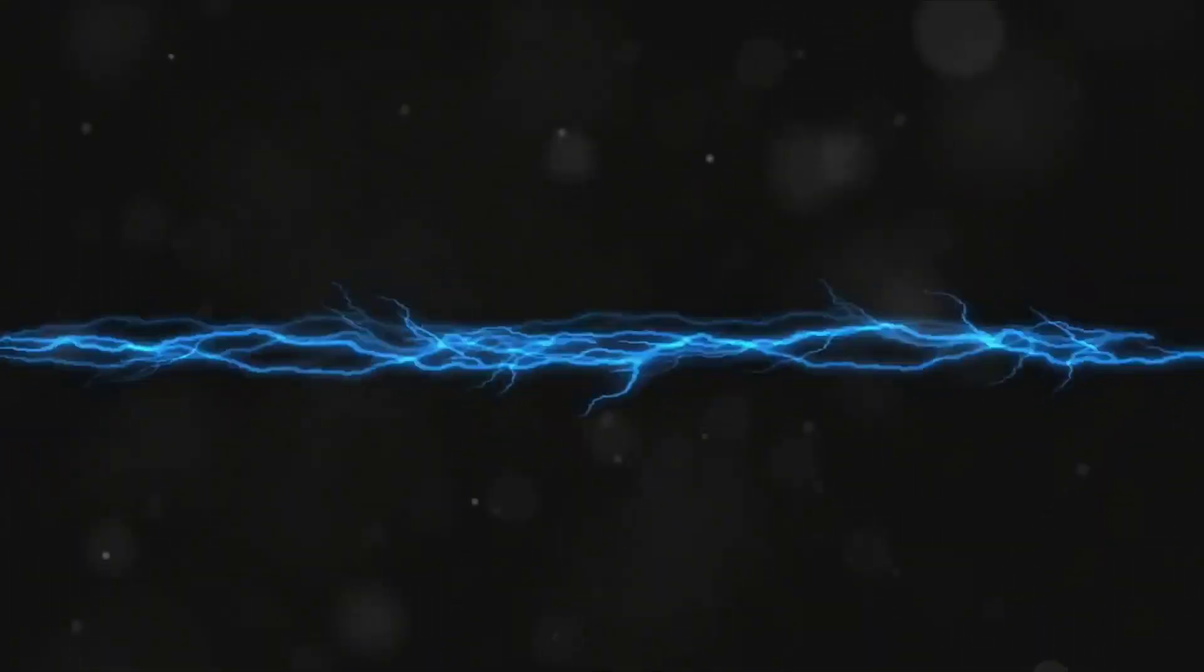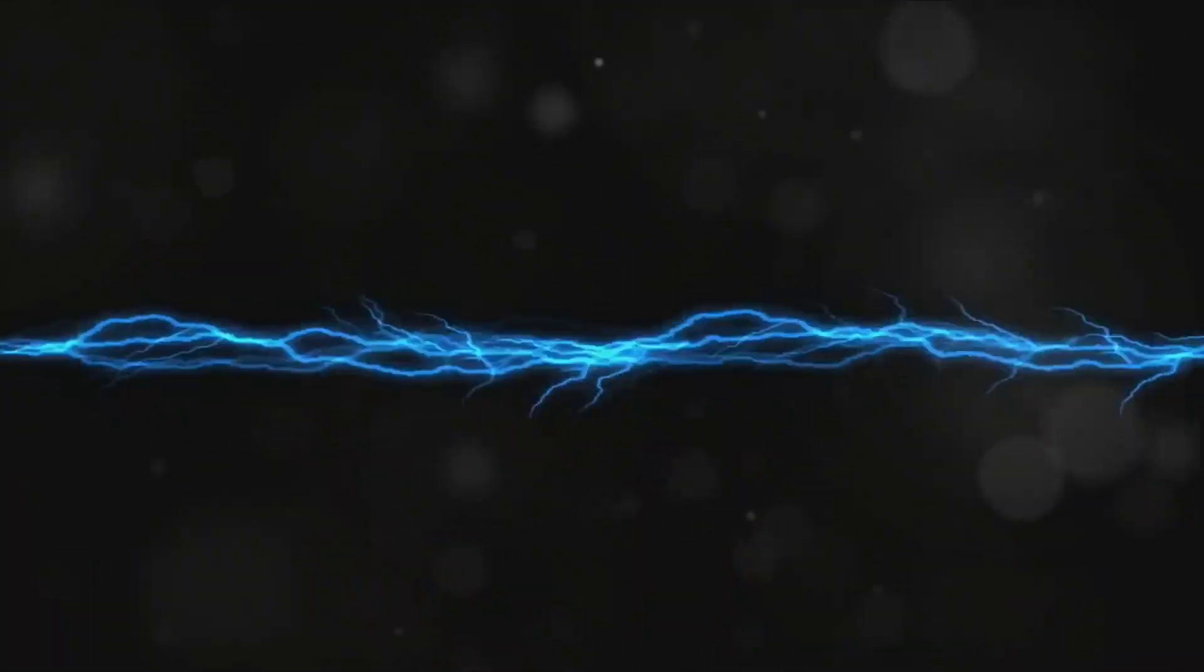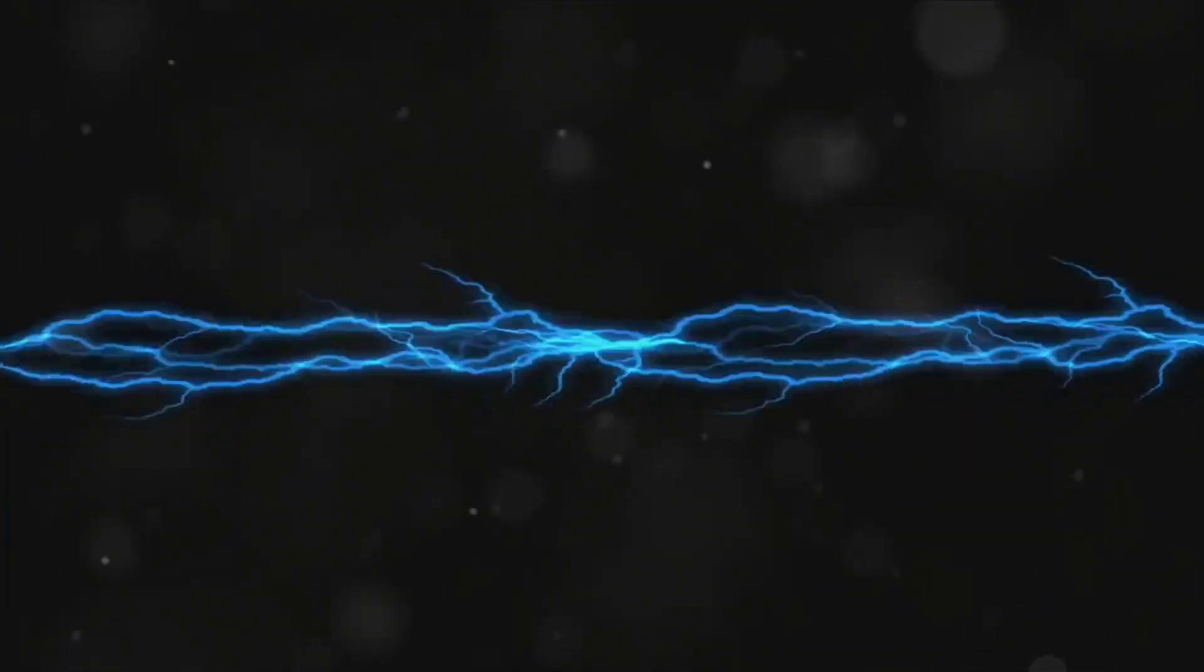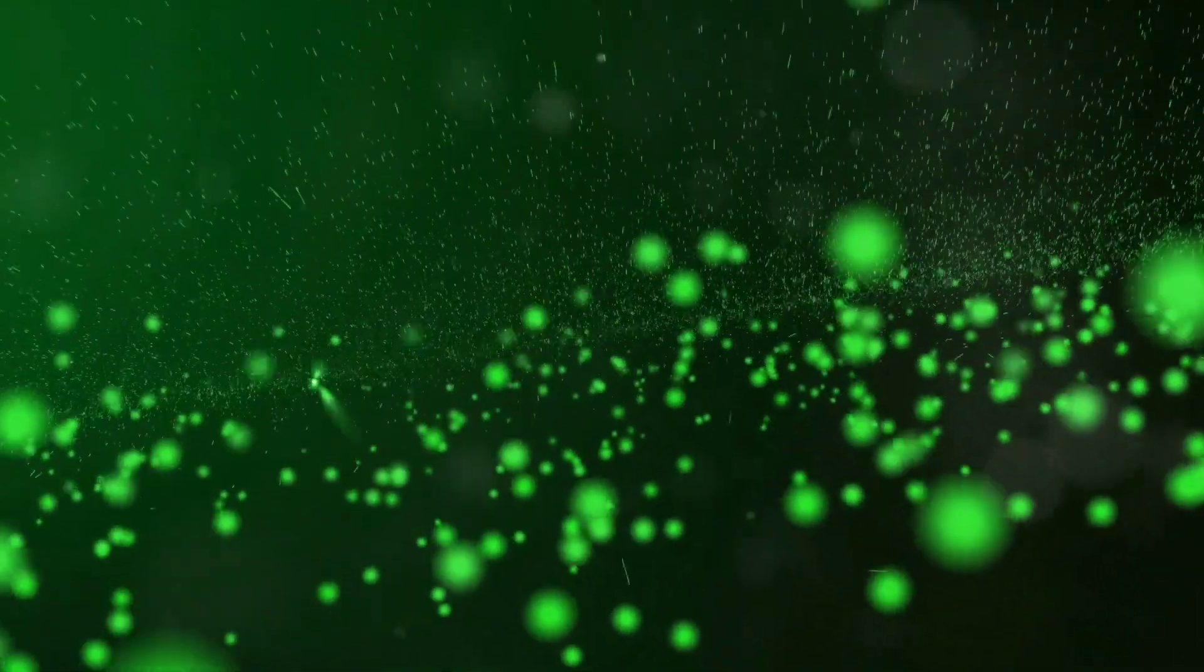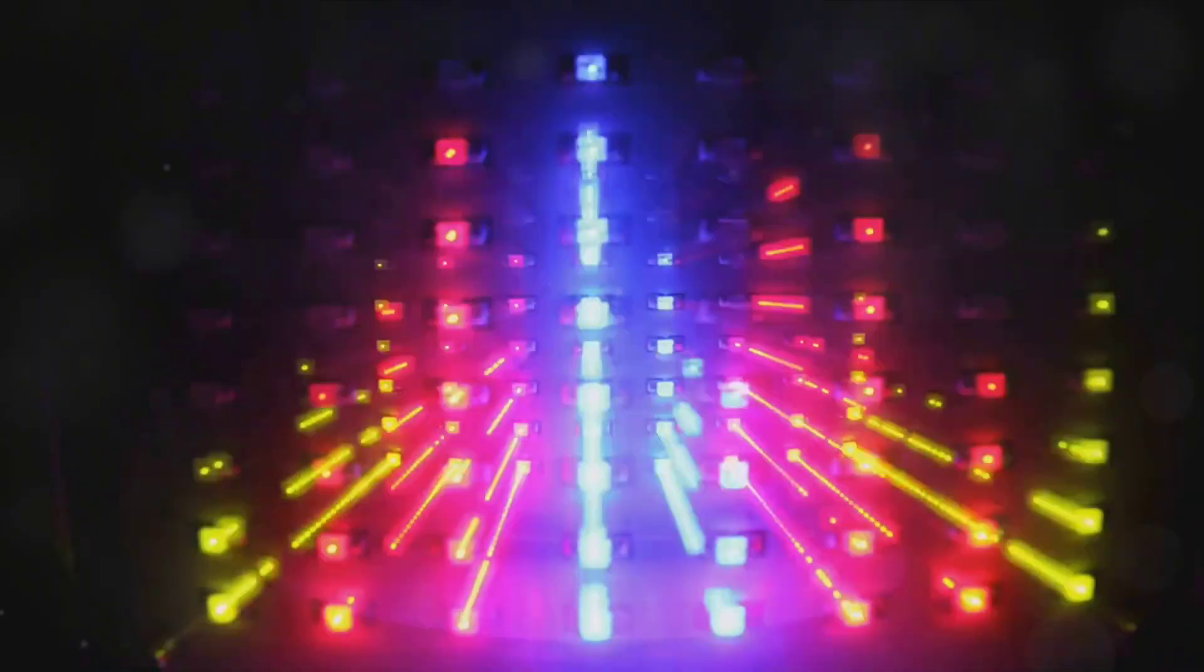Now, you might be wondering, what happens if the light doesn't carry enough energy? Well, in that case, no matter how intense the light is, no electrons will be released. This is because the intensity of light doesn't affect the energy of its particles. It's all about the frequency or energy of the light, not its intensity.